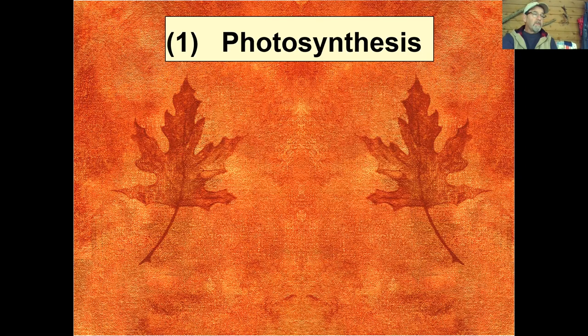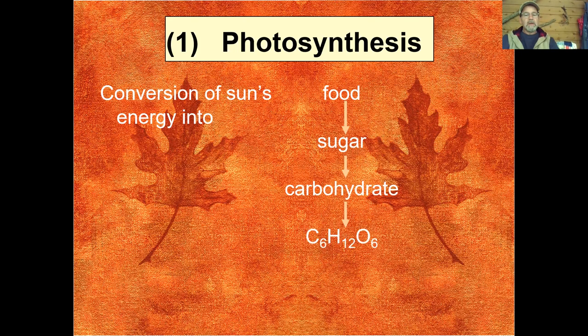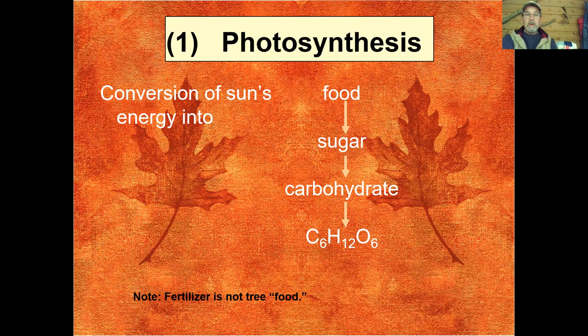We all remember what photosynthesis is — you learned that in grade school or high school biology. It's simply the conversion of the sun's energy. The plant, in this case the tree, converts the sun's energy into food. That food is sugar — more specifically it's the carbohydrate molecule C6H12O6. People will tell me that they have 'fed' their tree, but what they mean to say is that they fertilized their tree. We can't feed a tree — a tree feeds itself. It produces its own energy, but the things we do around the tree can help it produce food or be a detriment to that process.